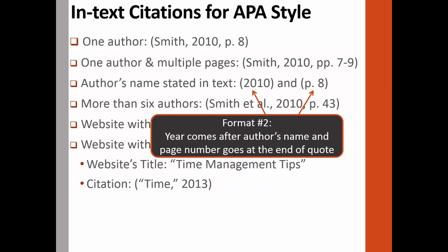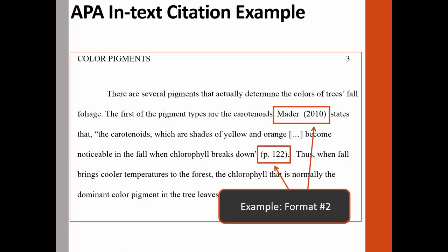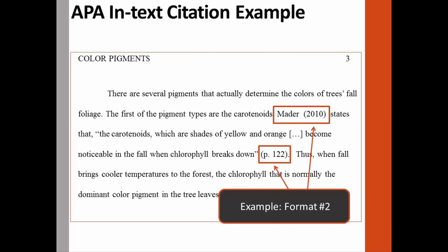Sometimes a source's author is introduced in the sentence preceding the borrowed information. When this occurs, the publication date in parentheses must be placed next to the author's surname, and the page or paragraph number will be placed directly after the quote or paraphrase and before the period. In this example, the author is introduced before the quote, so the publication year — in this case 2010 — is in parentheses directly after the author's name. Then we have the quote, and the page number is in parentheses directly after the quote and before the period.